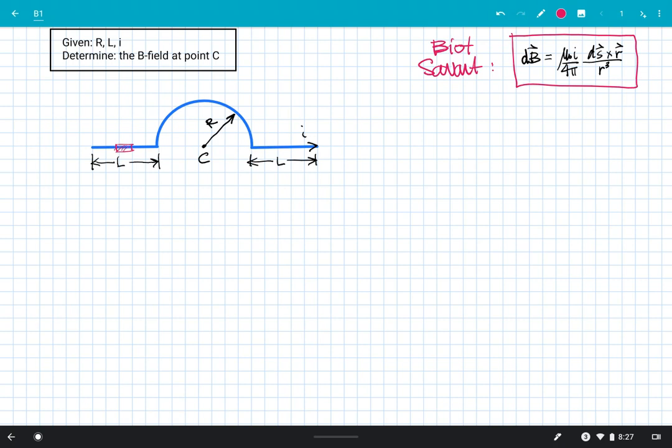I'm drawing it really big. DS is infinitesimally small, of course, but this would be my DS. DS is always in the direction of current and it is a really small section of your wire, so it would point to the right there. What I want you to notice is that R, the vector R, always points from the source current to your point of interest.